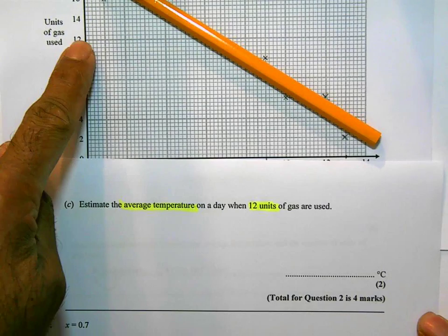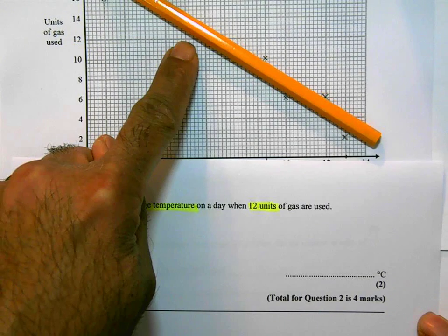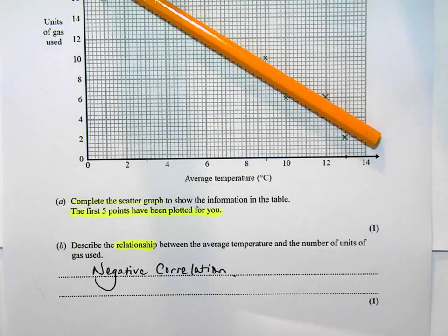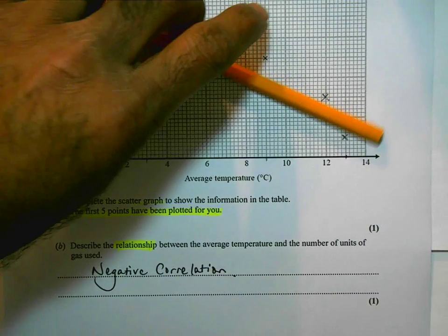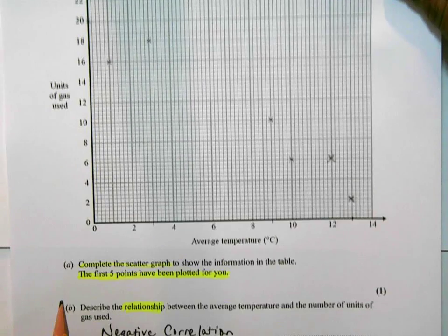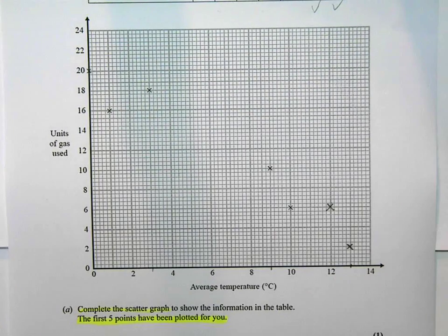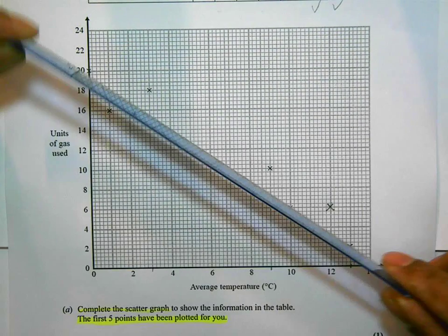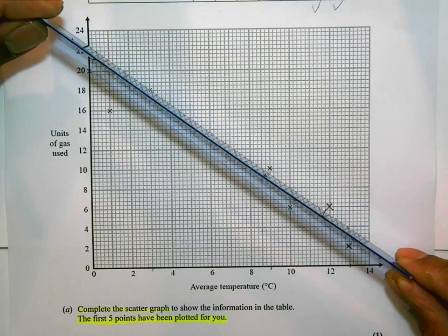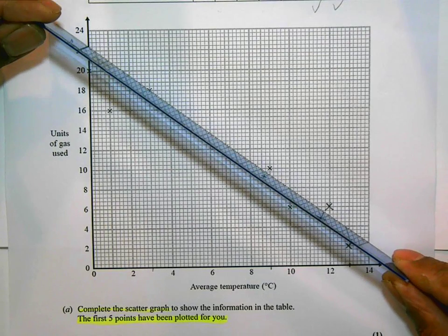So we want to estimate the average temperature on a day when 12 units of gas are used. You should be familiar with how to do this. We need to first of all draw a line of best fit, then read off from 12 units of gas, go along to our line of best fit, and then come downwards and read off what the temperature should be. So let's go about doing that. I'm going to lower it so we're looking just at the scatter graph.